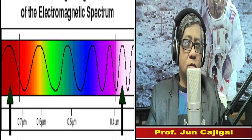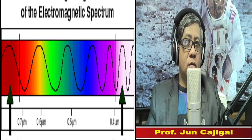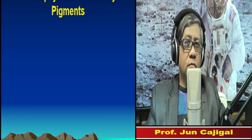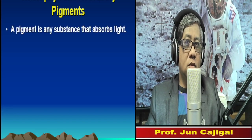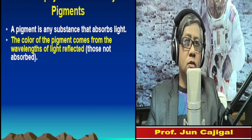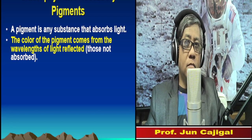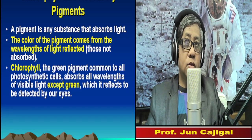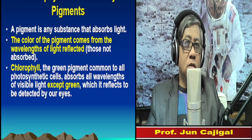Now let's study the pigment necessary for photosynthesis, which is chlorophyll. A pigment is any substance that absorbs light, and the color of a pigment comes from the wavelengths of light reflected. Chlorophyll is a green pigment that absorbs all wavelengths of visible light except green, which is reflected and detected by our eyes. That's why we see chlorophyll as green.